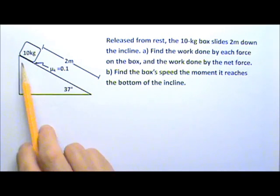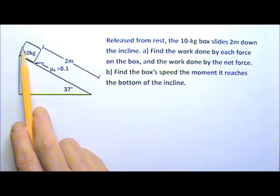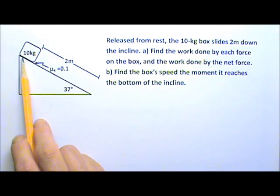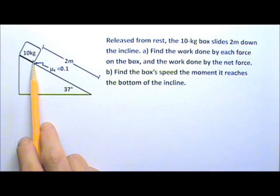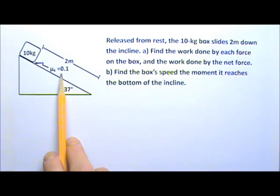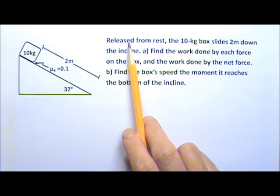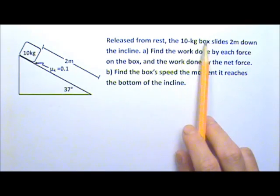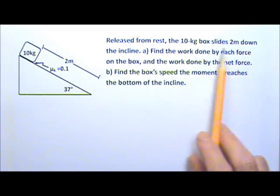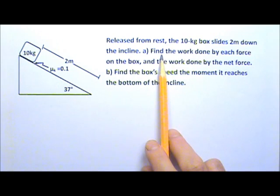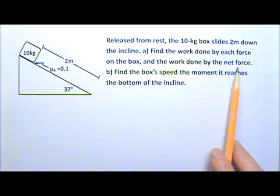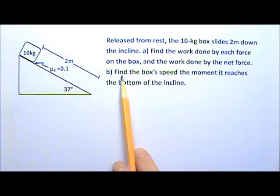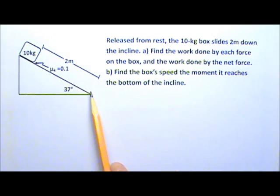Here we have a 37-degree incline and a 10 kg box at the top of the incline. The coefficient of kinetic friction between the box and the incline surface is 0.1. The box is released from rest and slides 2 meters down the incline. We want to find the work done by each force on the box, the work done by the net force, and then the box's speed when it reaches the bottom of the incline.